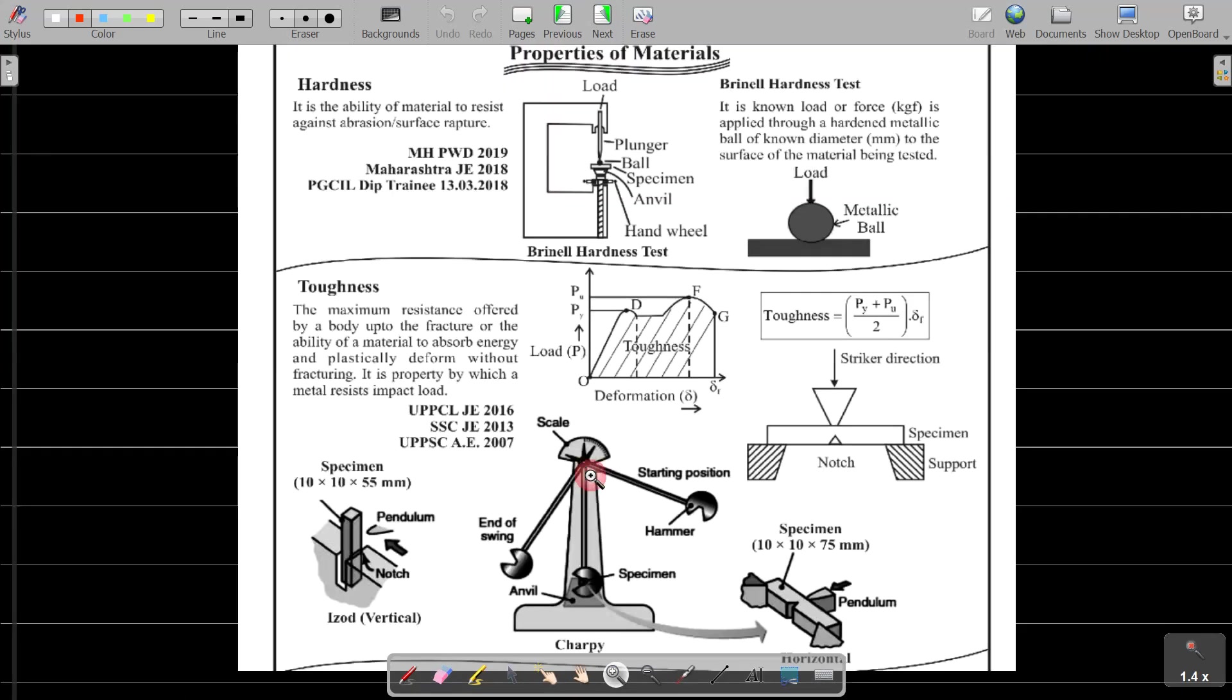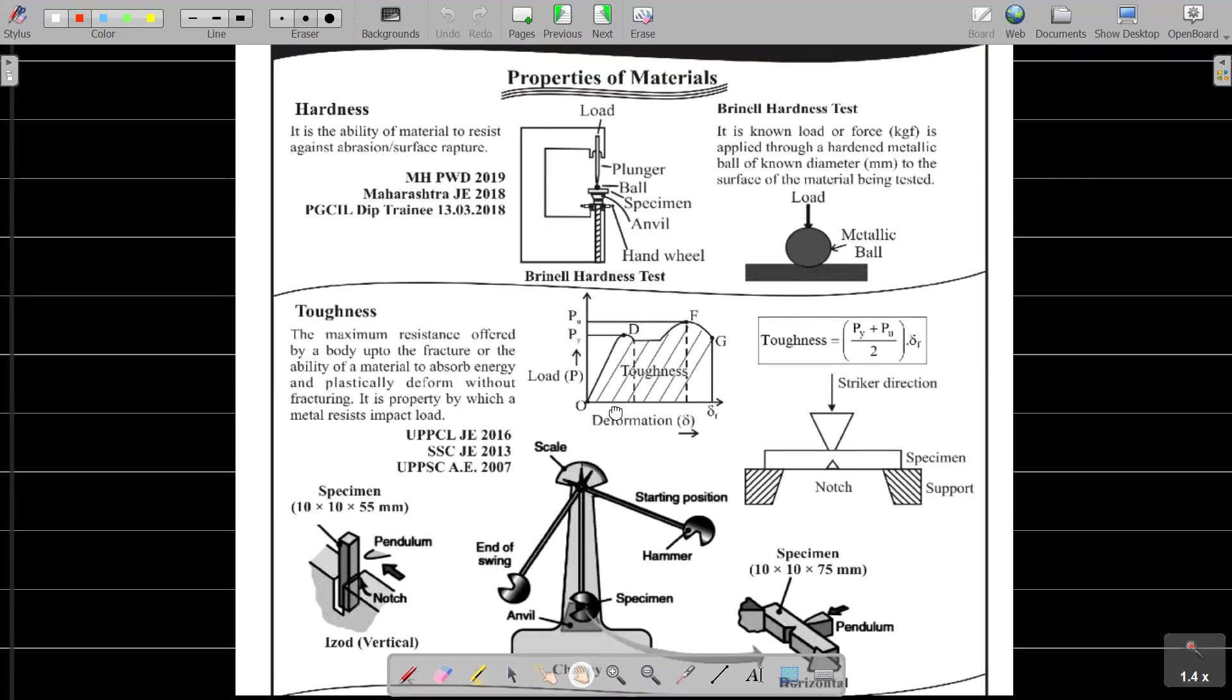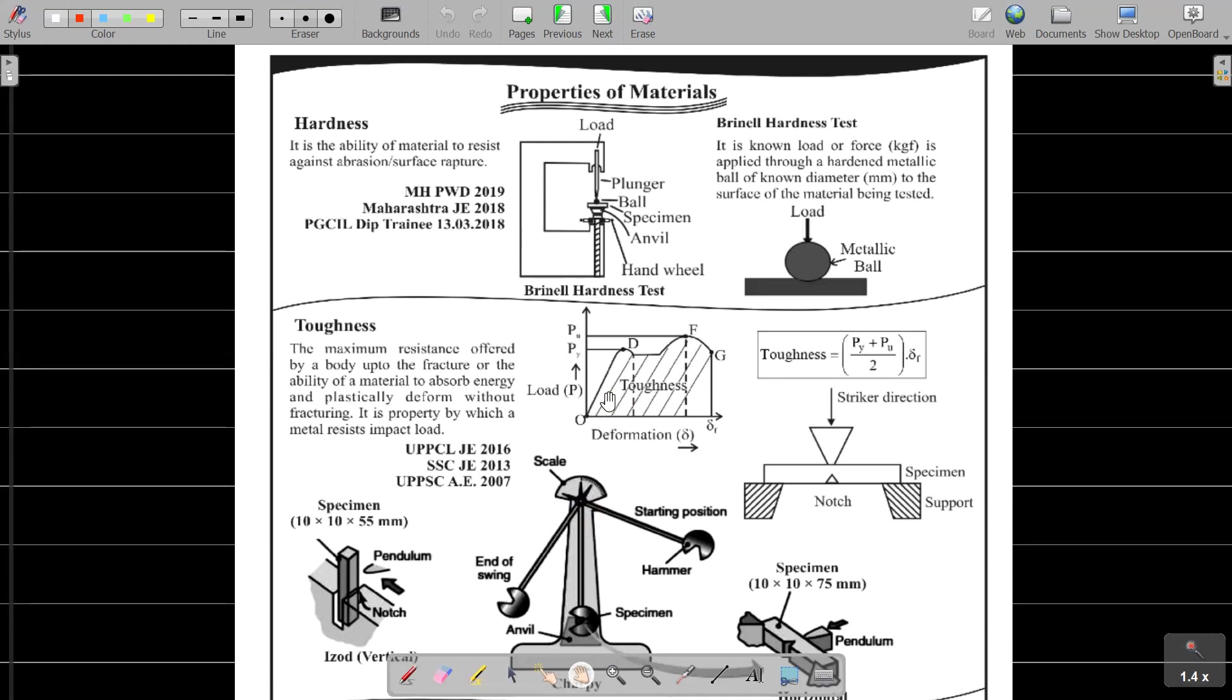Hardness is the ability of material to resist against abrasion or surface roughness. Hardness is measured with the help of Brinell hardness test, where a hardened metallic ball of known diameter is pressed into the surface of the material being tested.